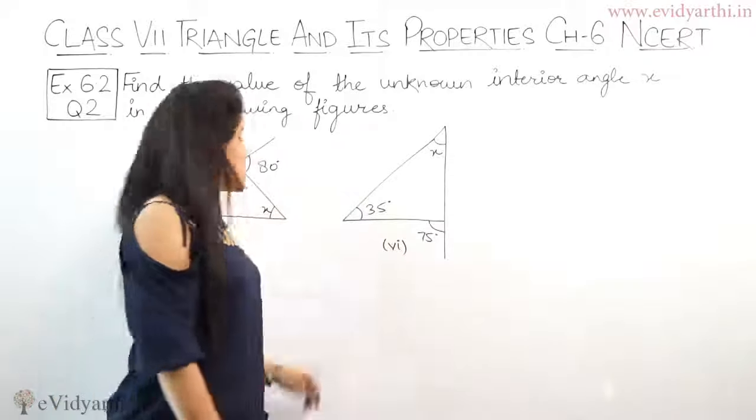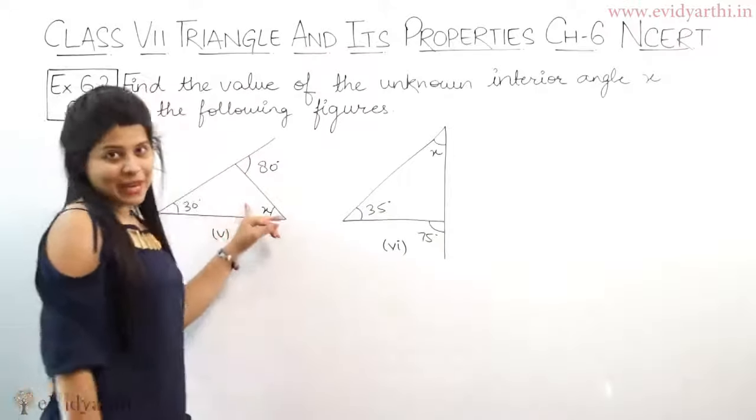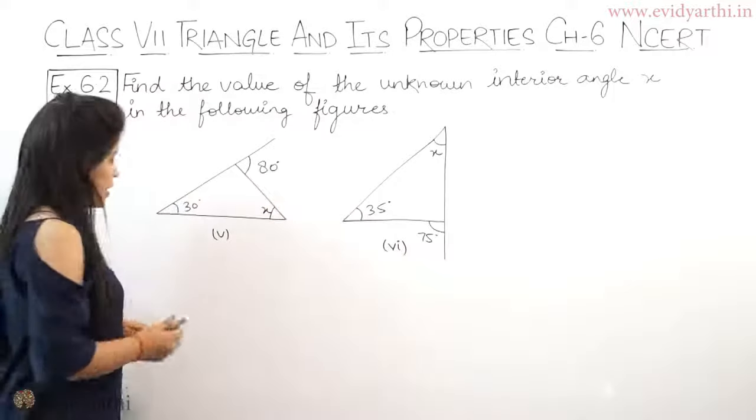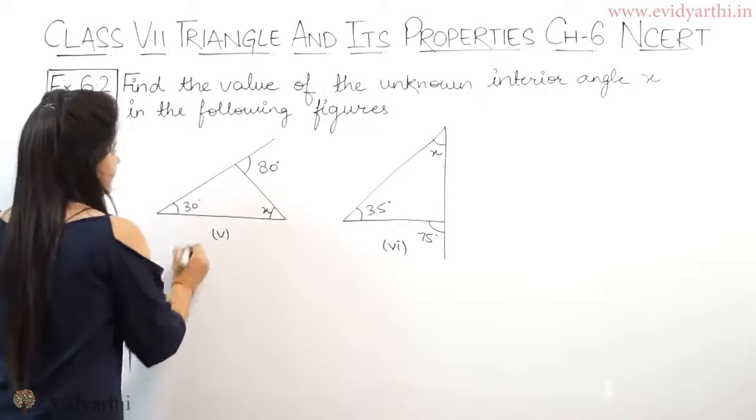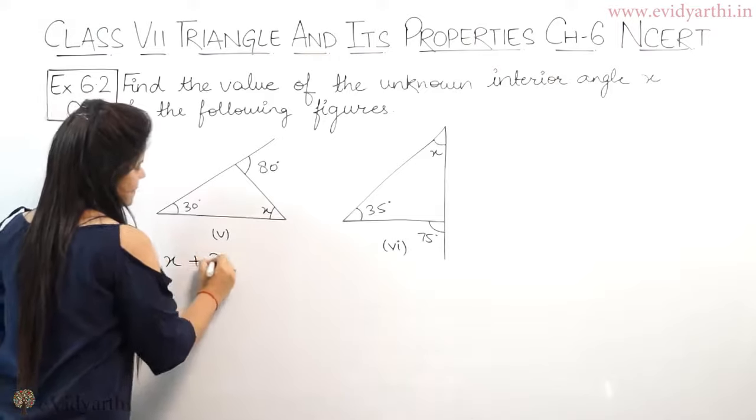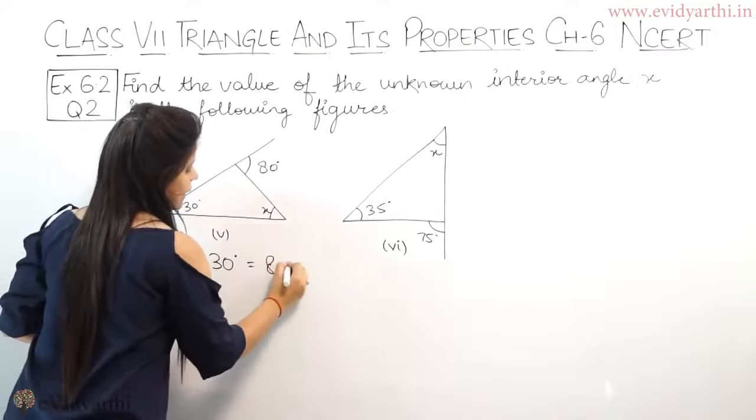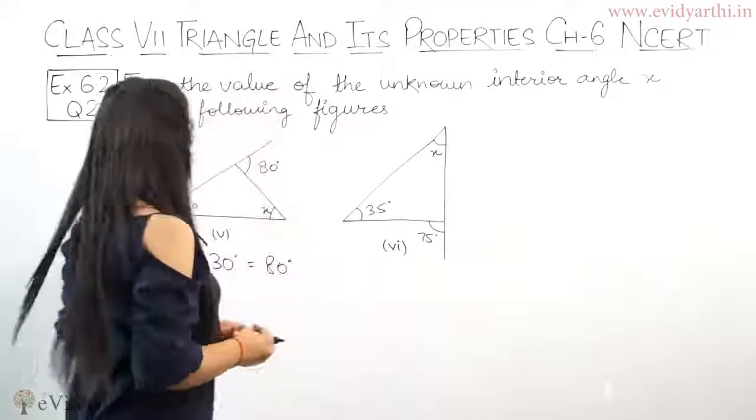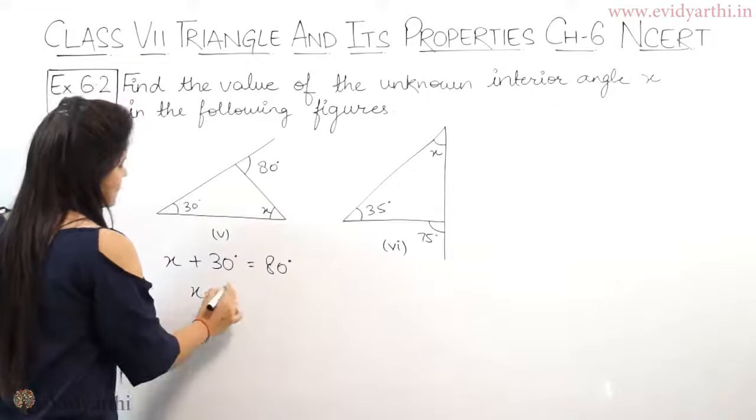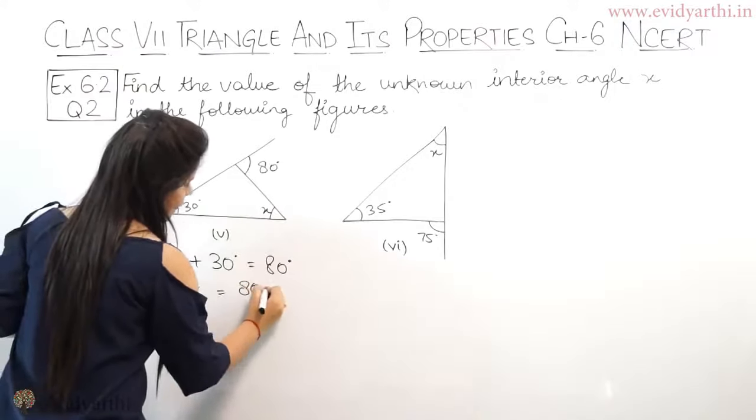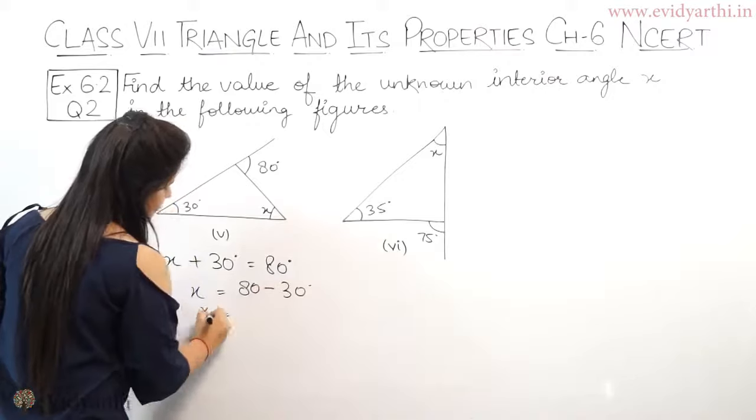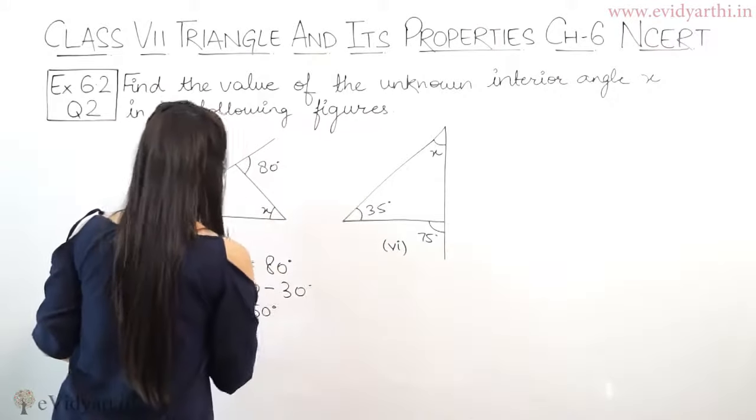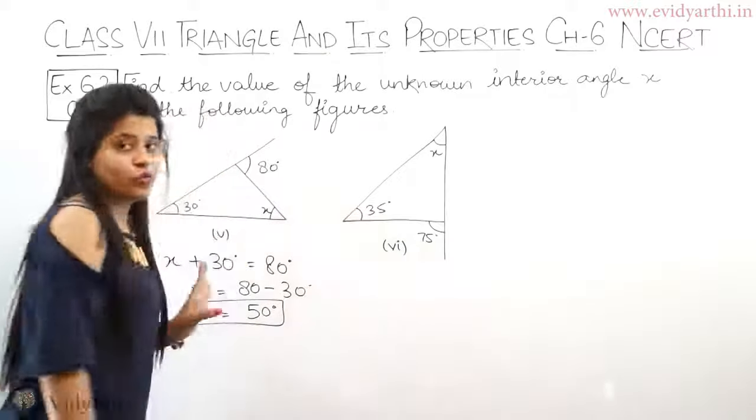Now coming to the fifth part. Again, you need to find x, exterior angle is given, and one angle is given. Now, x plus 30 degrees equals 80 degrees because of the exterior angle property. So x equals 80 minus 30, which gives us 50 degrees. So x is 50 degrees.